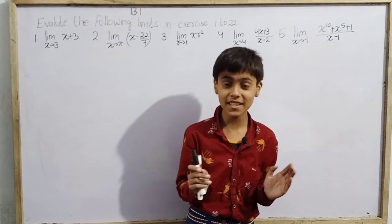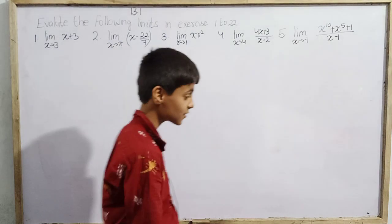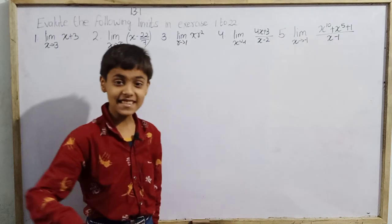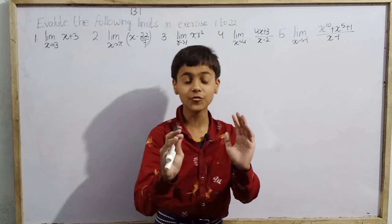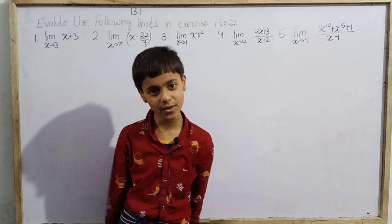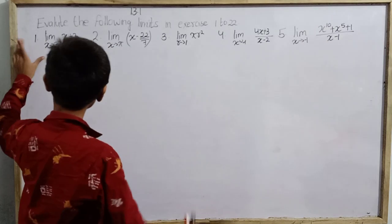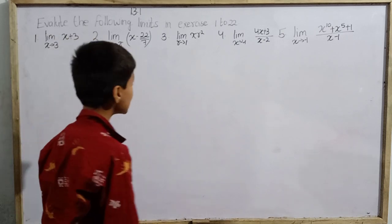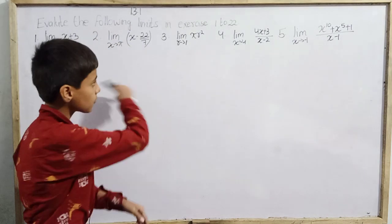Hello everyone and welcome back to SK Wander Kids. Today we are going to do Exercise 13.1, Class 11th NCERT Mathematics. Since limits and derivatives concepts are really very useful in physics, we have to cover all of those things. So first, from limits and derivatives, we evaluate the following limits in Exercise 1 to 22. We are going to do the first 5 questions.